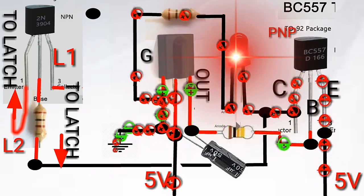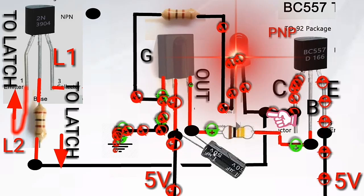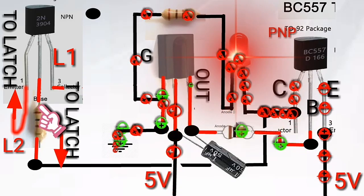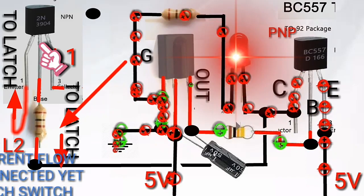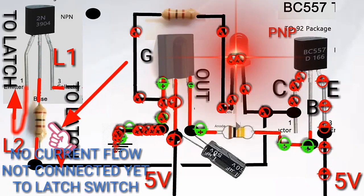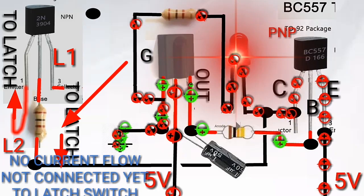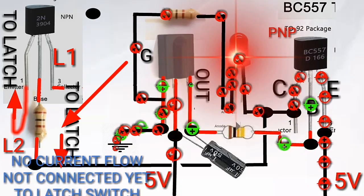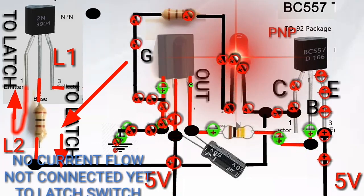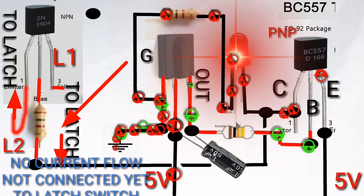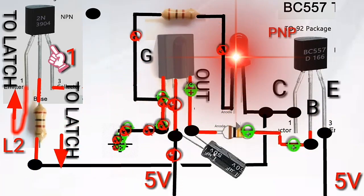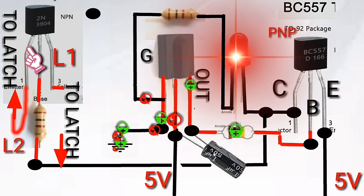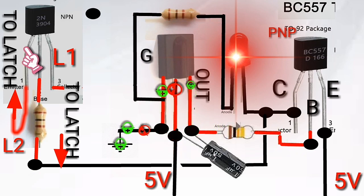Also supplied the current to the base of the 2N3904 via a 100 kilo ohms resistor, and this current is only 50 micro amp and amplifies the collector emitter current by 17.5 milliamp.